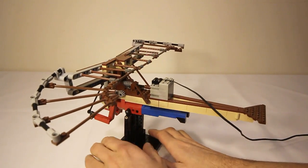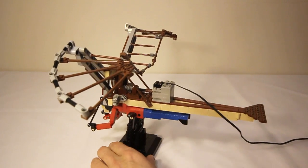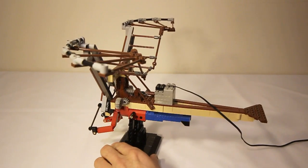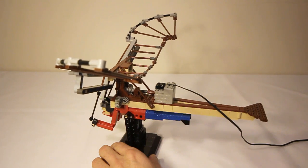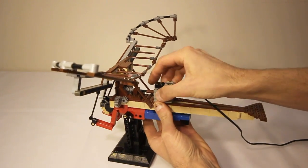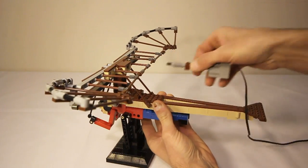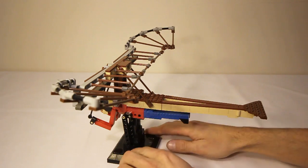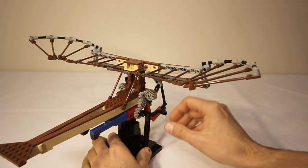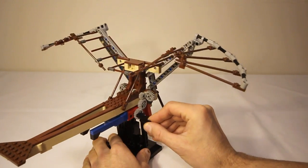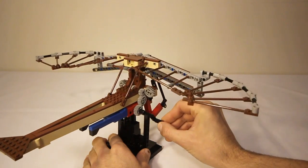Right now I'm using this old 9-volt motor, but you can just as easily use a power functions M motor. But we'll stop it for now and take it off. If you take off the motor, you can also power it manually using this crank on the side, and it is operated quite easily.